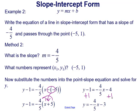Either way, we were given a point that the line passed through and the slope of the line, so we had to solve for the y-intercept one way or the other.